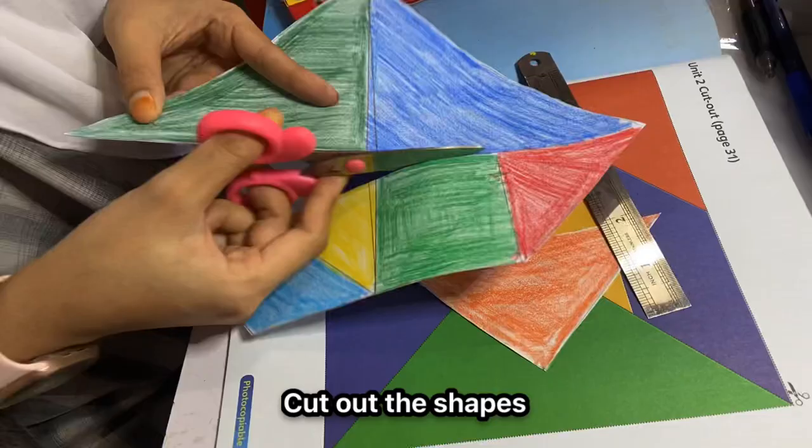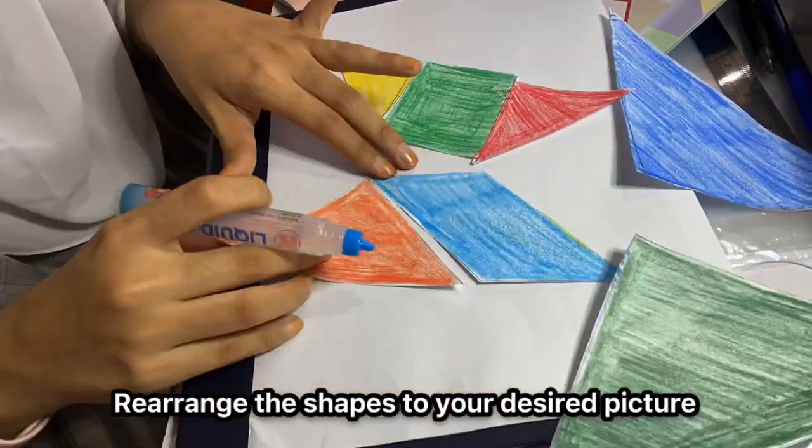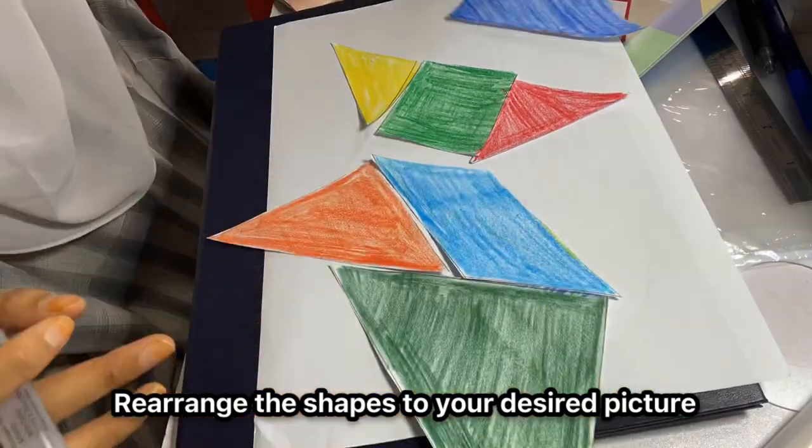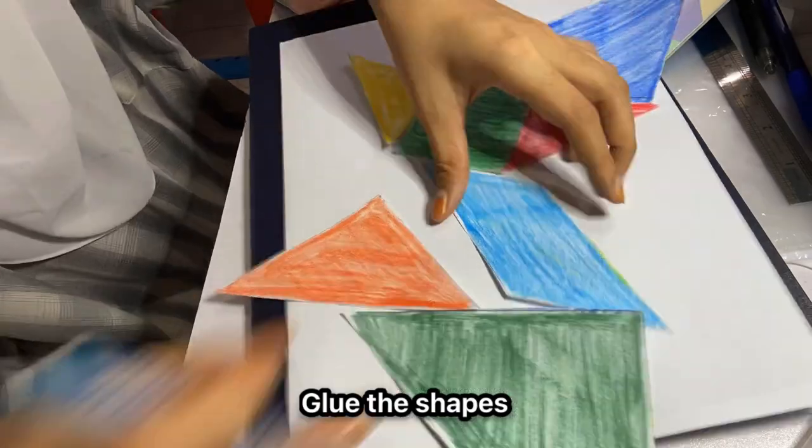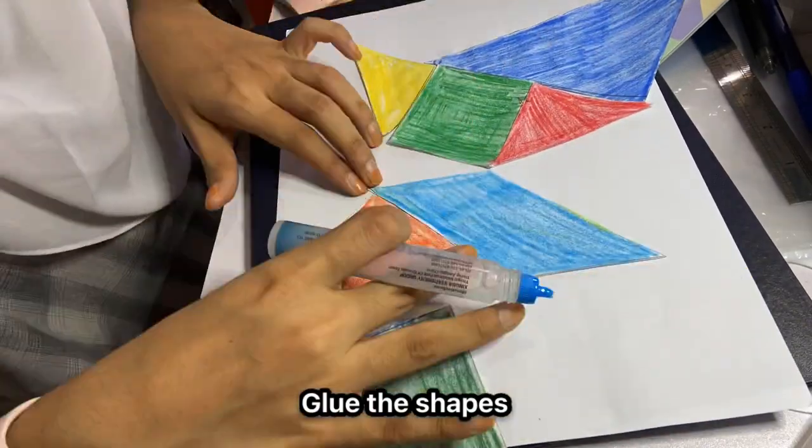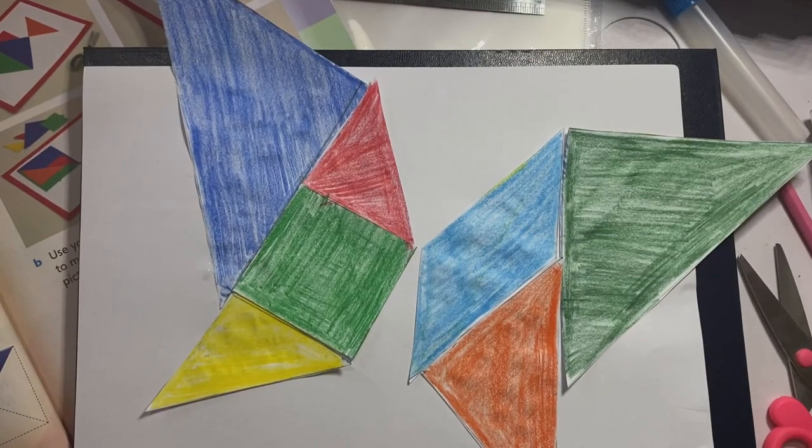After you're done coloring, now you need to cut all the shapes. Once you've finished cutting all the shapes, rearrange all the shapes on a piece of paper to get the shape you want. And then, using a glue, you paste all the shapes.